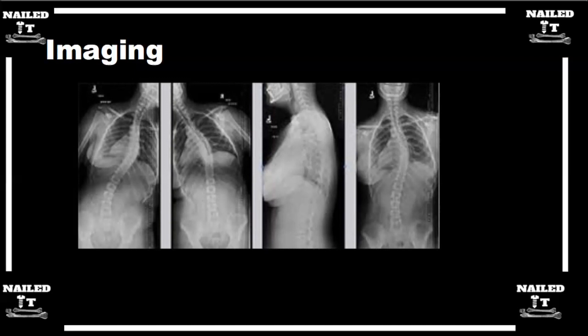If you look at these X-rays right here, you can clearly see that thoracic curve. Although it bends a little bit on that right bending film, the first picture you see here, it doesn't bend a ton. That picture, if you kind of rotated it, looks very similar to that standing PA view that you see on the right side. So that curve is a structural curve that's going to need to be addressed with surgery.